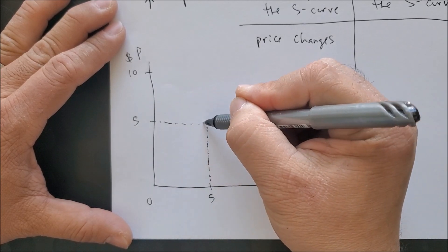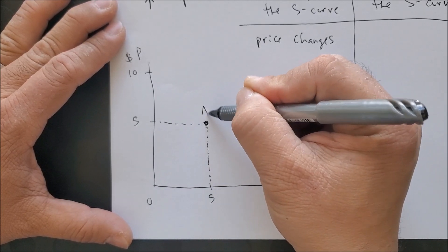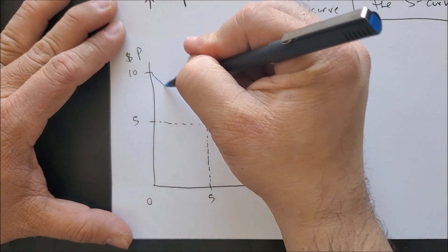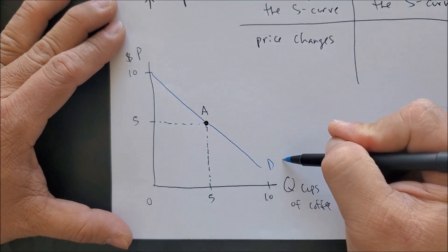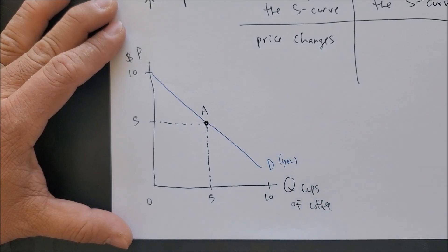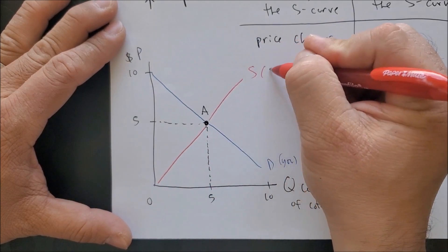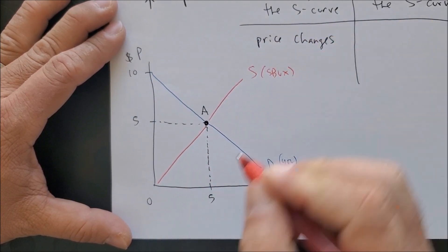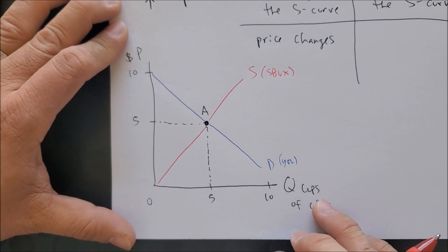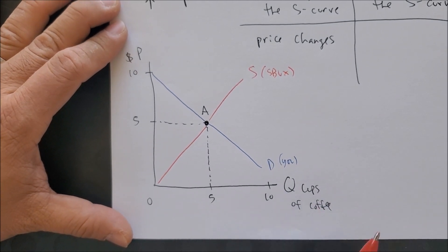We're going to have five and five as our equilibrium point, point A. Now we can draw our demand curve, and we can also draw our upward sloping supply curve. We'll use Starbucks' ticker symbol to represent the red curve.